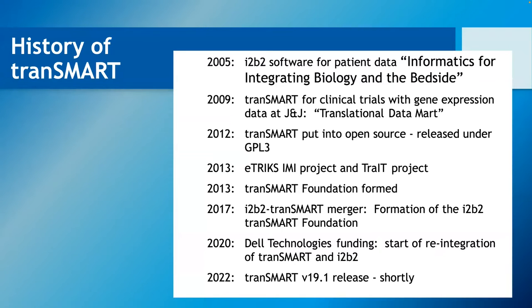After a few years using i2b2, the folks at J&J wanted to do more with the information — in particular, broader analysis looking at clinical trials and bringing in gene expression data. So they created what they called the Translational Data Mart, which eventually became TranSMART, back in 2009, and TranSMART has been going since that time.